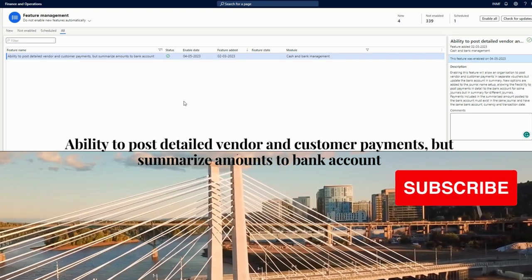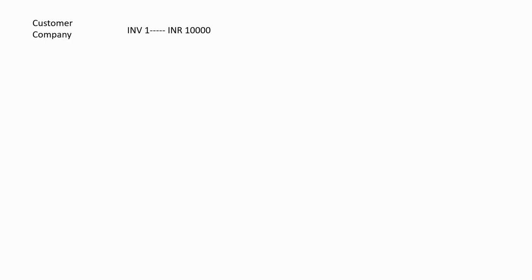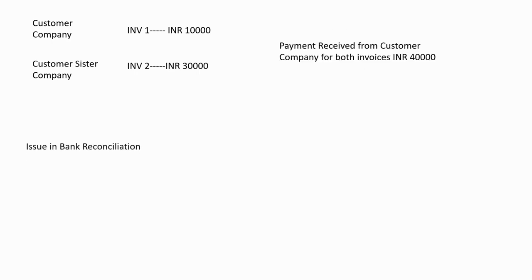In Dynamics 365, assume there is a customer company as a customer master with one invoice of 10,000 rupees. There is another customer master which is the first customer's sister company, and we have raised invoice two for 30,000. However, both these customers are separate customers in Dynamics, but in real life they come under the same company. As a result, this customer will pay the whole amount of 40,000 in one go.